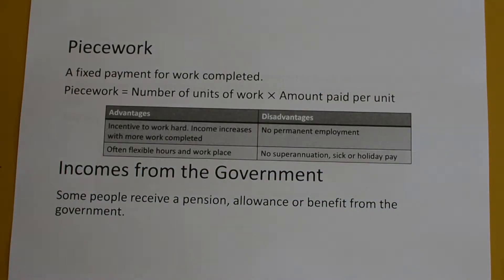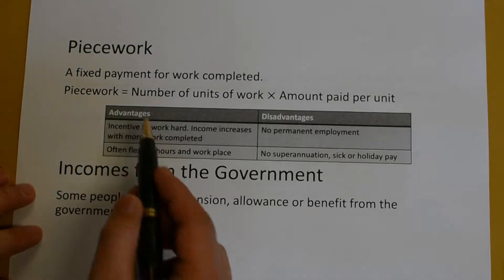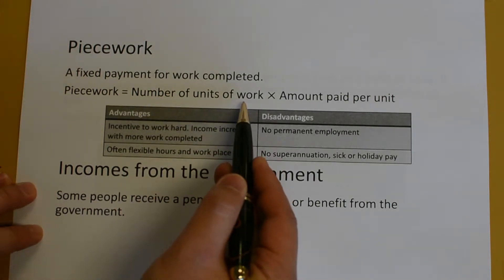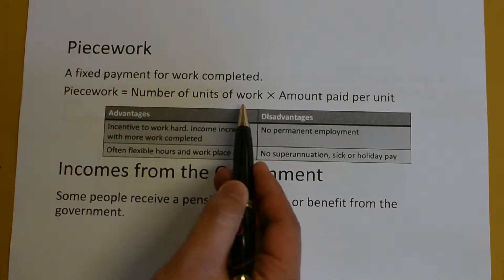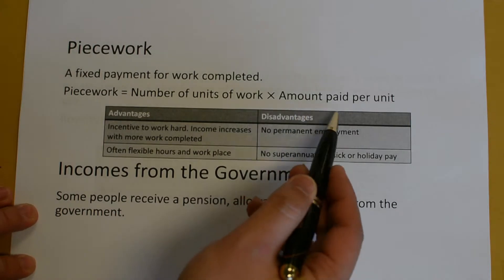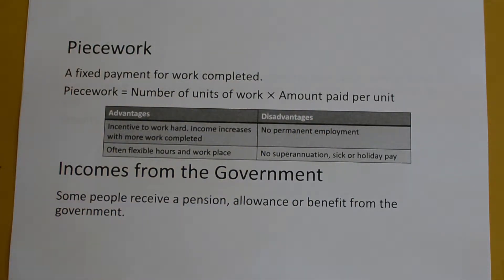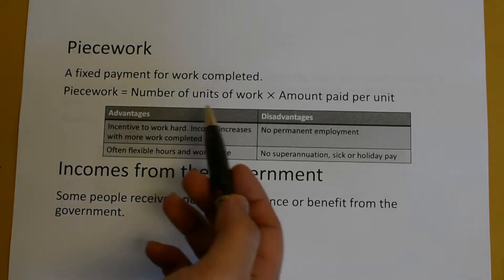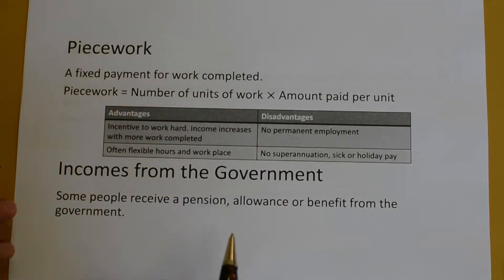Piecework is a fixed payment that you earn for everything that you complete. So tailors, for example, if they finish 10 shirts they'll get paid an amount for each shirt. Piecework is calculated by the number of units of work — in the tailor's example, how many shirts he completes — multiplied by the amount paid per unit. So if the shop pays him $50 for every shirt he makes, he'll earn $50 times however many shirts he made.